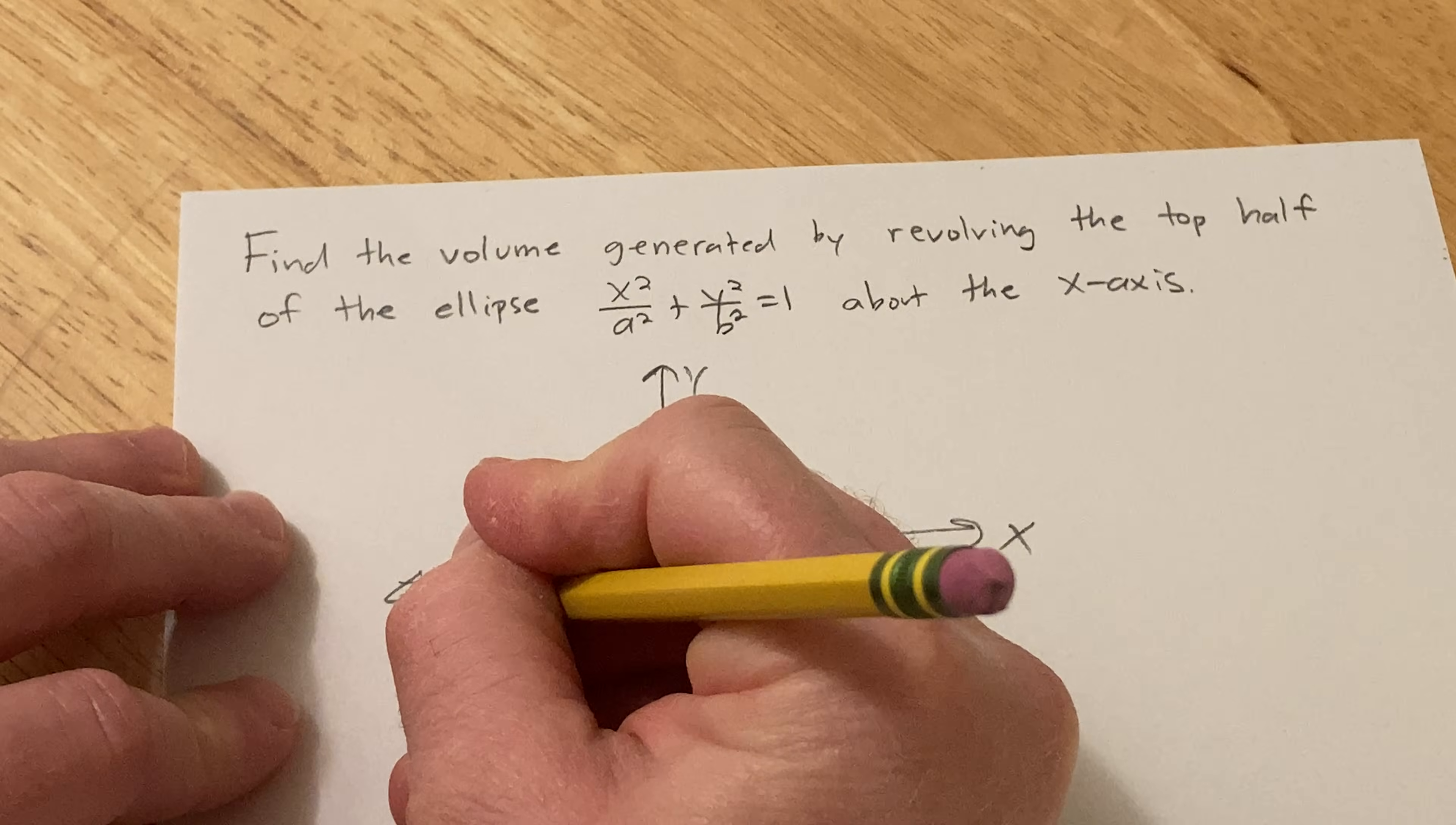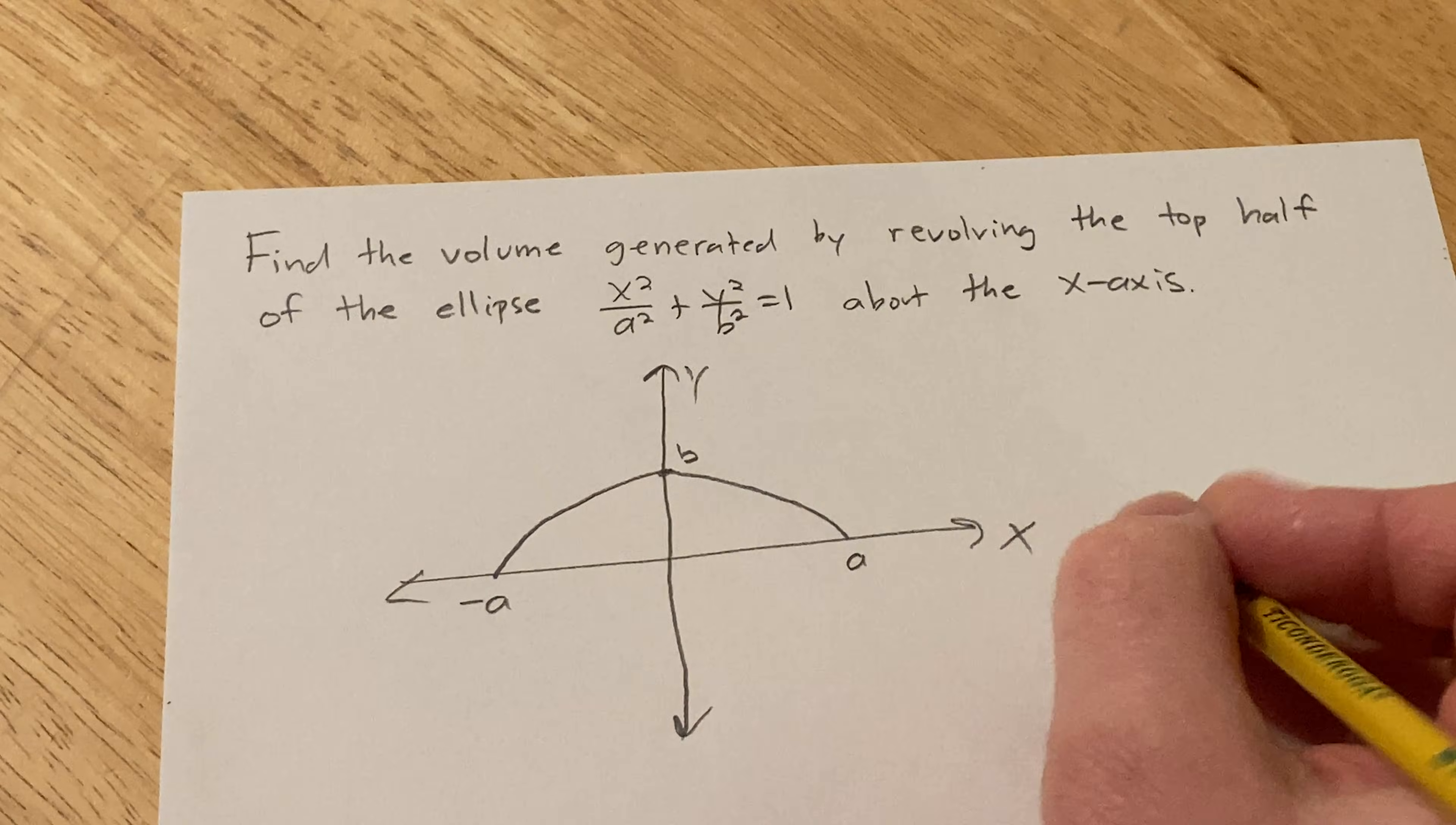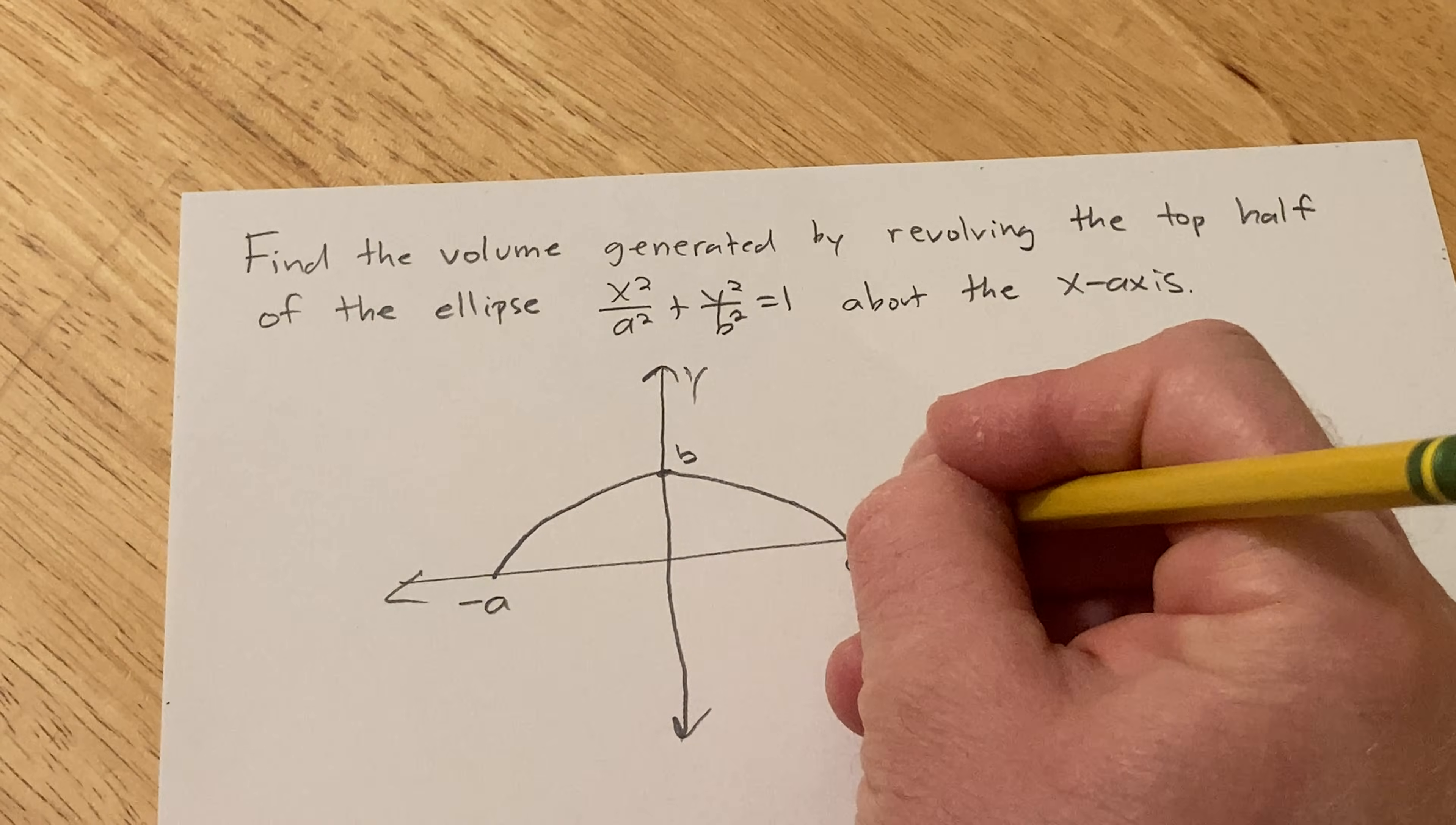Where this is a, and this is negative a, and this here is b. And that's just the top half. And we're going to rotate it about the x-axis.